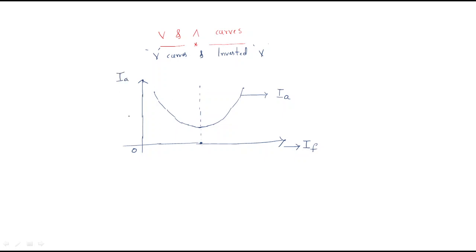The field current is given based on the excitation. Up to a particular point it will be acting as normal excitation. Before that point it is under excitation, and after the normal excitation point the excitation increases, so that is called over excitation.